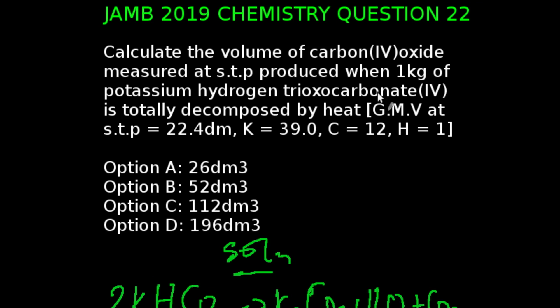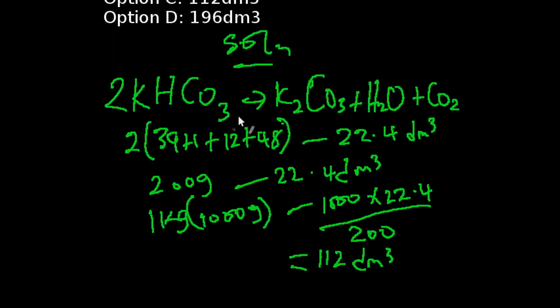Question 22 of JAMB 2019 Chemistry Examination. Calculate the volume of carbon dioxide measured at STP (Standard Temperature and Pressure) produced when 1 kg of potassium hydrogen trioxocarbonate-4 is totally decomposed. These are values for molar volume of gas at STP for potassium, carbon, and hydrogen. For us to calculate the volume of carbon dioxide, we must first of all write the equation of reaction.